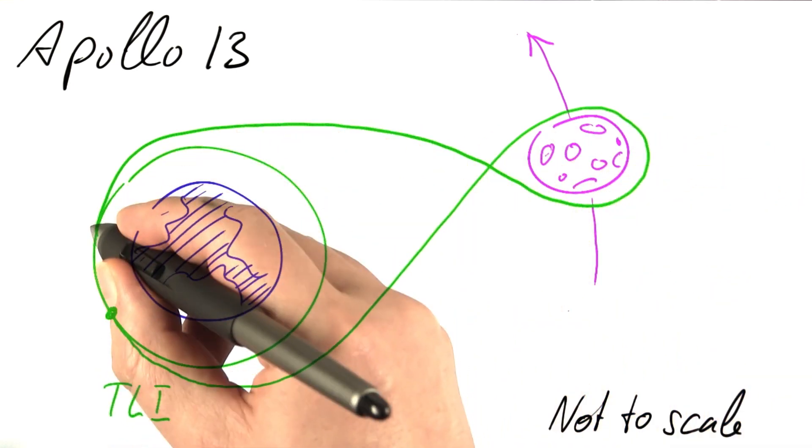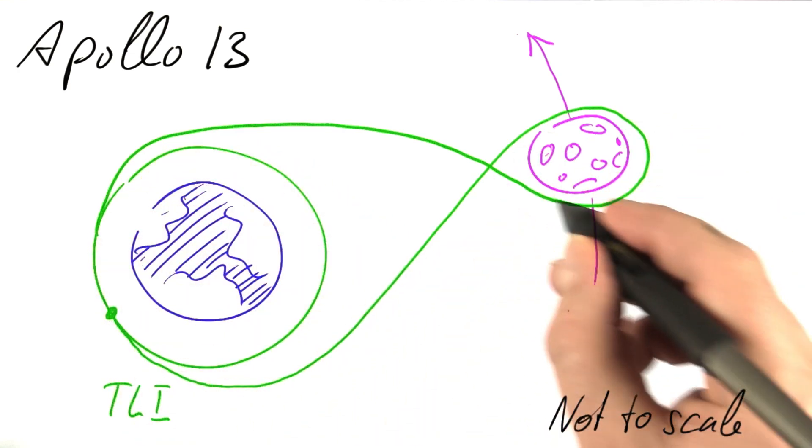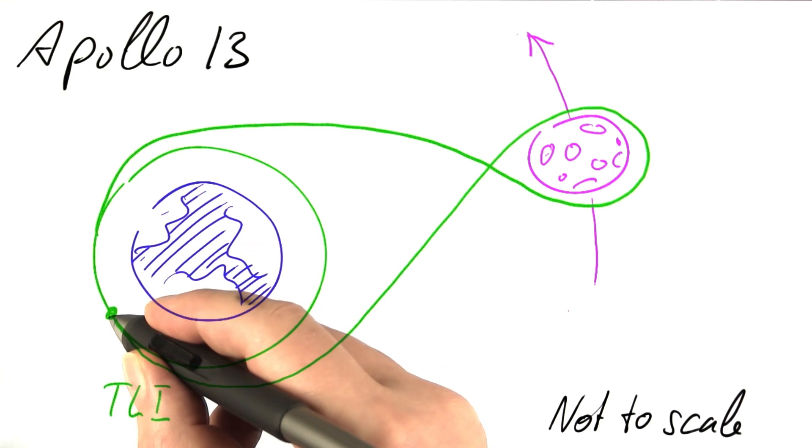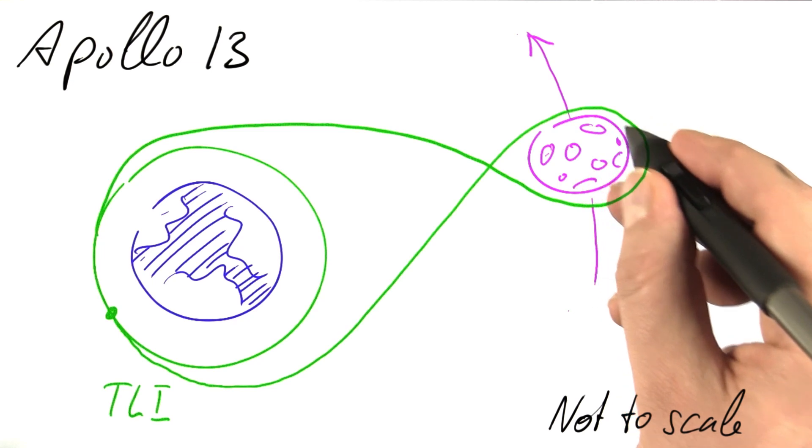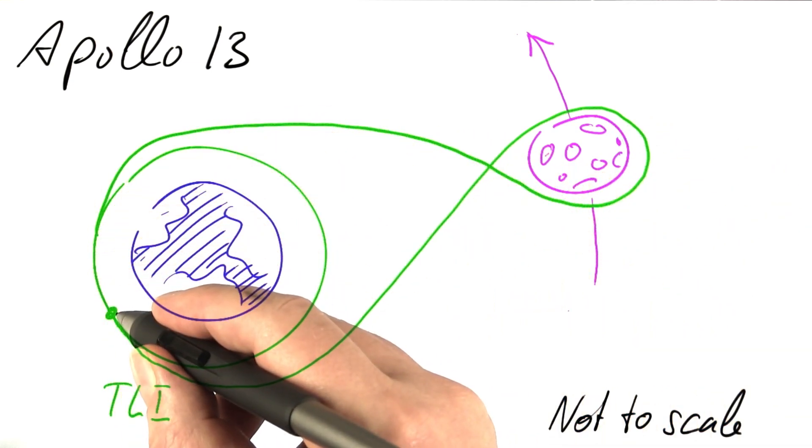This trajectory is a so-called free return trajectory. It's going to return safely without the astronauts doing anything about it. So in case anything breaks, we're going to return, no matter what, just by gravity.